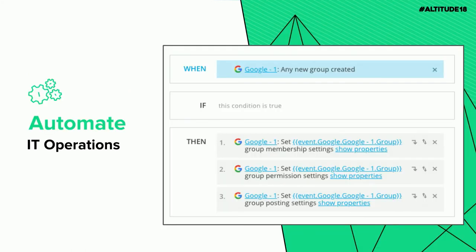For automation here, it's a simple one: if you have a default set of permissions you want all groups to have when created, just create a workflow that says whenever a new group is created, set those permissions. This gives you peace of mind if you misconfigure something in the admin console, and it empowers your end users — you can let them create groups without worrying about them making it public or adding external members.